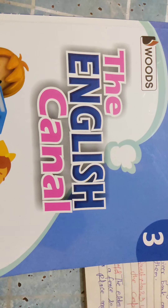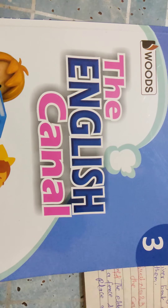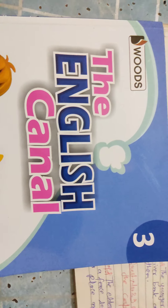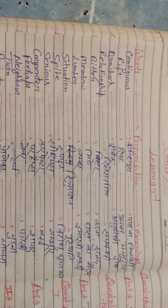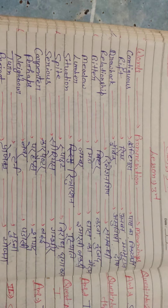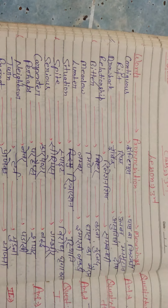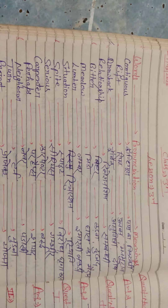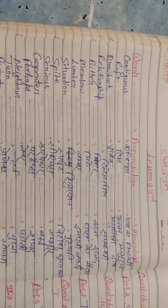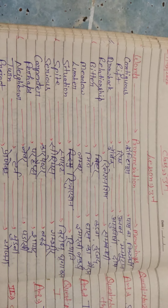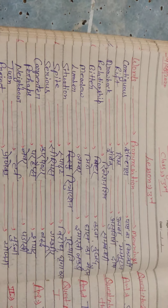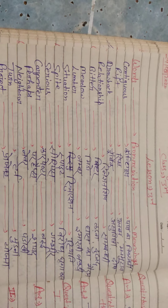Lesson number 3rd, and the lesson's name is 'The Two Brothers.' Firstly, topic — meanings. First meaning: contiguous, spelling C-O-N-T-I-G-U-O-U-S, contiguous. Second: rift. Third: drawback.